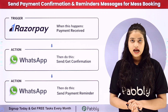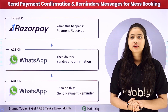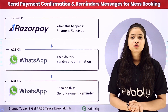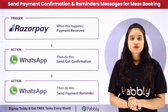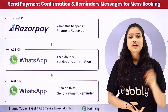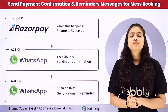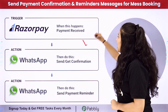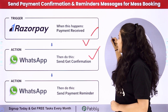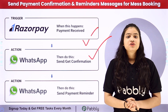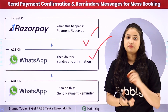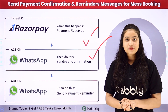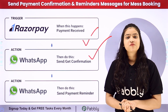To automate this entire process, we will set up a connection between Razorpay and WhatsApp using PabblyConnect, which is an amazing automation and integration software. PabblyConnect works on two principles: Trigger and Action. In the Trigger we will take Razorpay, and in Action we will take WhatsApp Cloud API to send and receive WhatsApp template messages — all without any coding or programming skills.